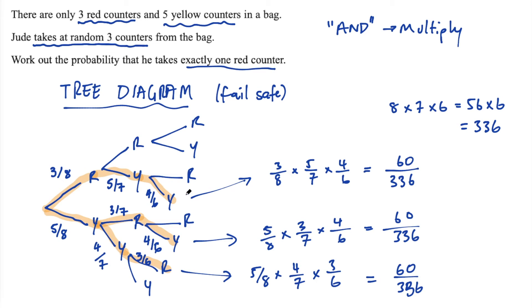Now we have the probabilities of each path. And we could get red and yellow and yellow, or yellow and red and yellow. So when we say or we add. So we want to add these fractions up. So in total, the probability of getting exactly one red, exactly one red.